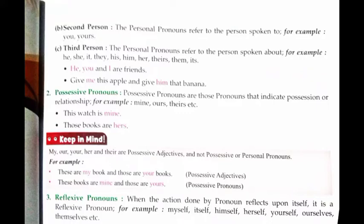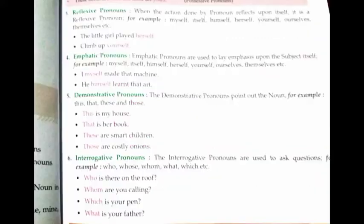Possessive pronoun की examples: 'This watch is mine' — यह घड़ी मेरी है, तो मेरे लिए 'mine' use किया। 'Those books are hers' — यह books उसकी हैं, तो उसके लिए 'hers' use किया।